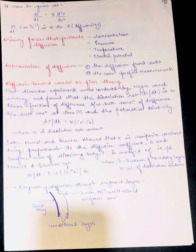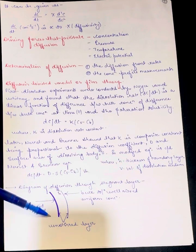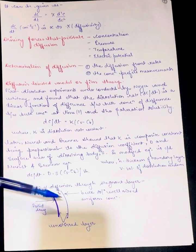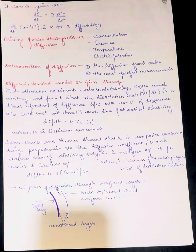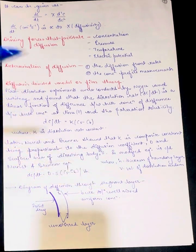Diagram of diffusion through stagnant layer: This is the solid drug, this is the unstirred layer, this is the temporary layer which we mix and shake, then it will break. Here is the bulk solution, well-mixed with uniform concentration.